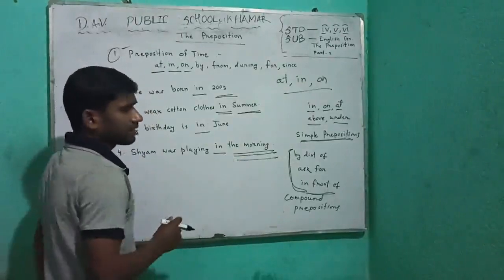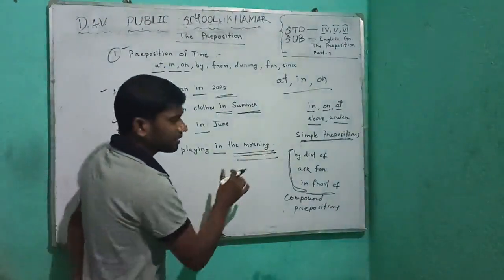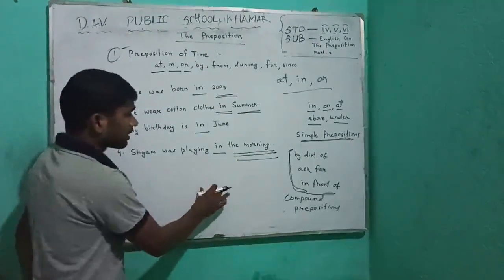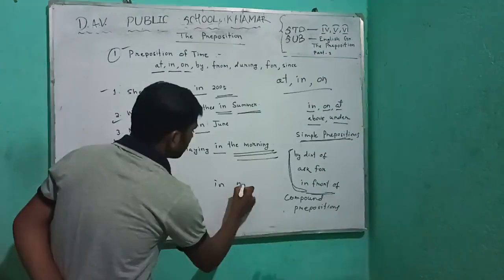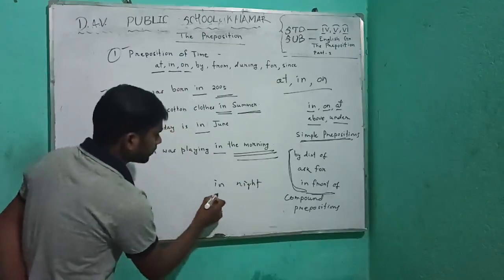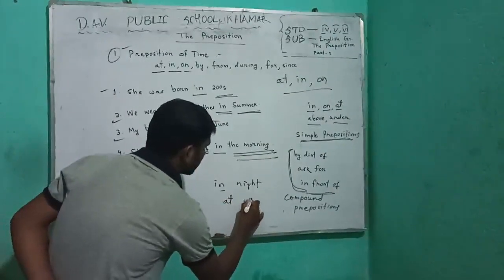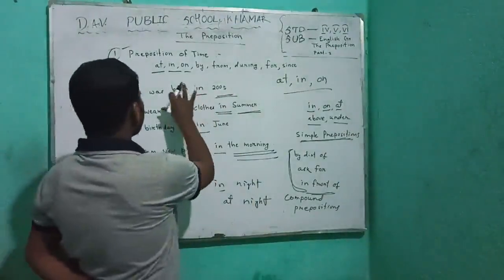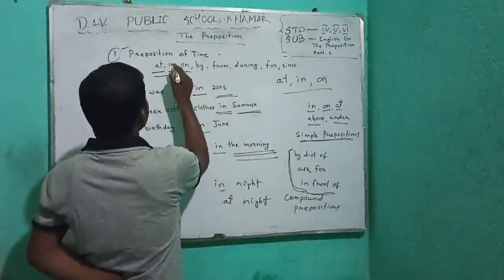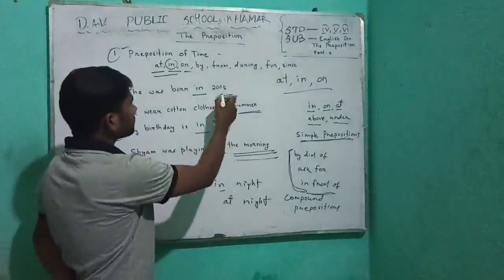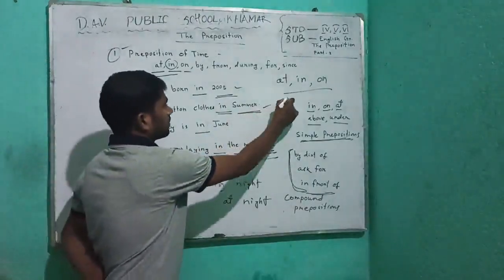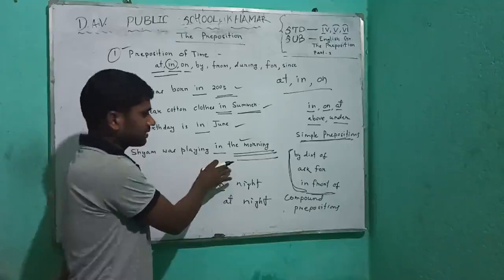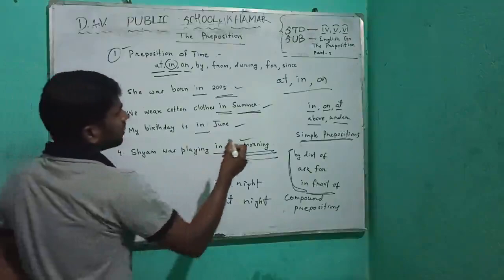In some cases, like a part of the day, we can write 'in the evening' or 'in the afternoon.' But 'in night' would be wrong — the correct form is 'at night.' That is an exception. So what did we learn? The preposition 'in' is used to indicate a year, a season, a month, or a part of the day.